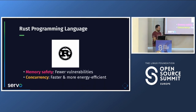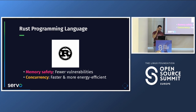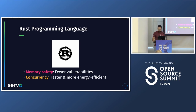Servo is written in Rust, which is special because the other popular web rendering engines are all open source these days but are written in C++. Rust has memory safety features and concurrency features that allow you to create programs with fewer vulnerabilities, which could run faster, and be more energy efficient.